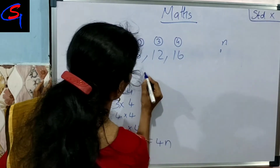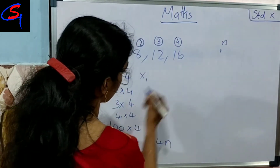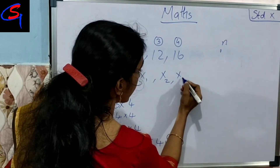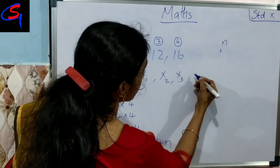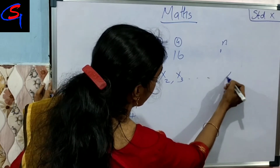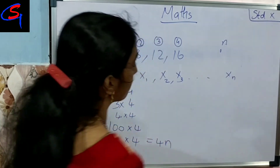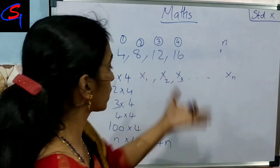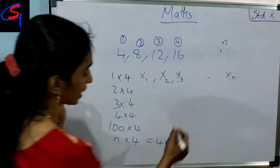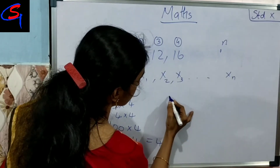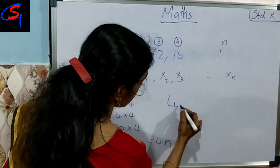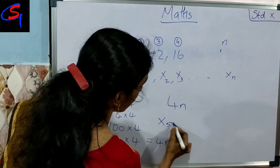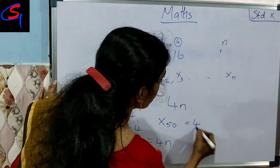This is 1, we have x1. 2, we have x2. 3, we have x3. 4, let's find n. Where n — in the end we will add this one. Then we add n, we add x. Then we choose 4 into n.